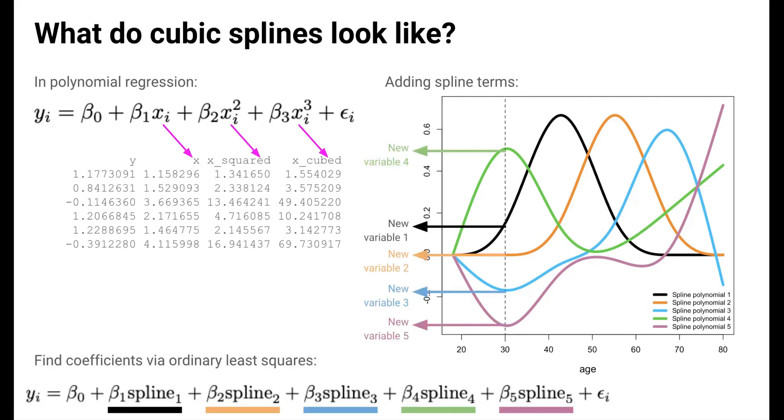So, for example, for a case whose age is 30, we would fill in their value for the five new variables by looking at the function value at age equals 30 for each of these five functions. We do this for all cases to fully define the five new transformed predictors, and we use these new variables in ordinary least squares regression.